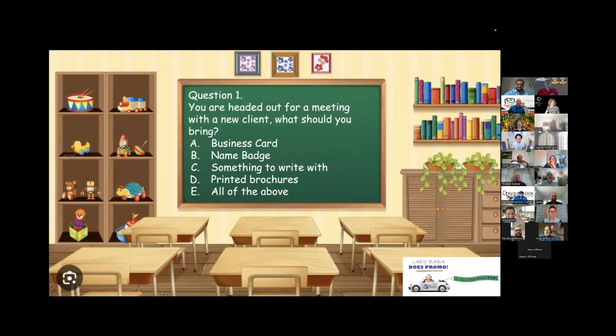Question one. We're going to go in order of my screen here. Carlos, you are headed out for a meeting with a new client. What should you bring? A. Business card. B. Name badge. C. Something to write with. D. Printed brochures. Or E. All of the above. You're going to go with E. All of the above. That is correct.